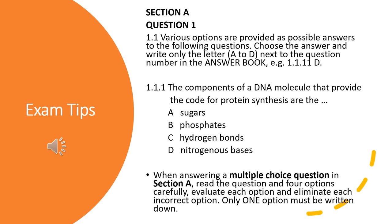Some exam tips on different types of exam questions. For a multiple choice question, various options are provided as possible answers. You have to choose the correct answer and write only the letter A to D next to the question number in your answer book. When answering multiple choice questions in Section A, read through the question very carefully, look at the four options, evaluate each option, eliminate each incorrect option, and only one option must be written down next to the question number.